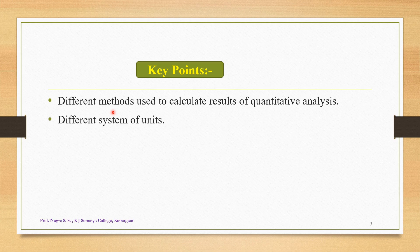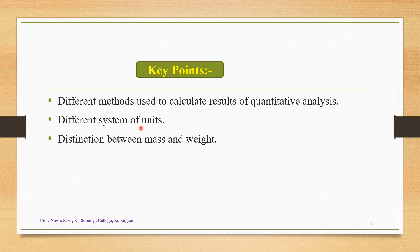The second important point we are going to study is the different systems of units — what are the different systems for units. The next important point is the distinction between mass and weight. Whenever we refer to the mass or weight of a particular substance, how do we distinguish between them? That important point we are going to study in this chapter.